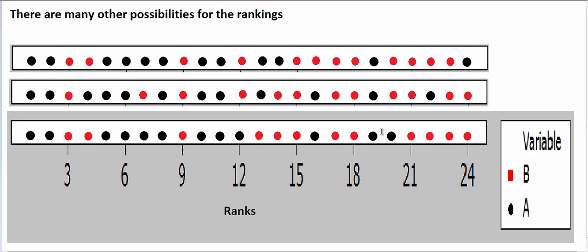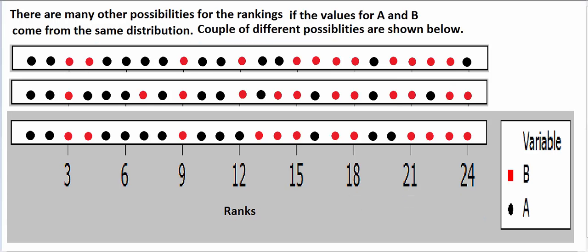So there are many other possibilities of the ranking. Here are just some of them. Actually, here are two other possibilities that could happen. So we want to see the probability based on all the possibilities that may show up.